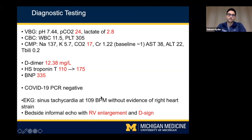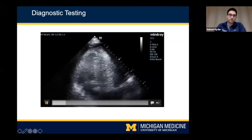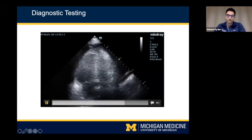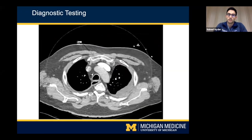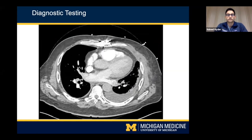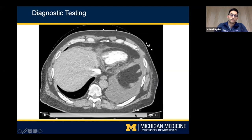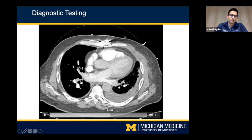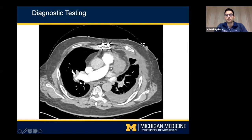EKG showed sinus tachycardia. An informal echo in the ED showed some RV enlargement and a D sign. We have limited images demonstrating the enlargement of the RV. The pulmonary embolism CT showed bilateral lobar PEs extending into the segmental and subsegmental branches, an enlarged RV-to-LV ratio, and slight narrowing in the right pulmonary artery felt to be related to the prior transplant.